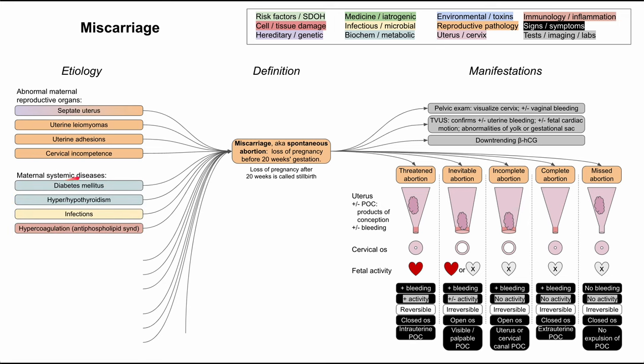The mother can also have systemic diseases that predispose her to miscarriages: diabetes mellitus, hyperthyroidism, hypothyroidism, infections, and systemic infections like sepsis. Some hypercoagulative processes are also relevant. One of the most common causes of miscarriage in women is antiphospholipid syndrome — a clotting disorder that is inflammatory in nature — which falls under maternal systemic disease.